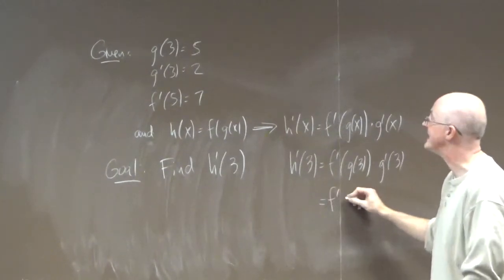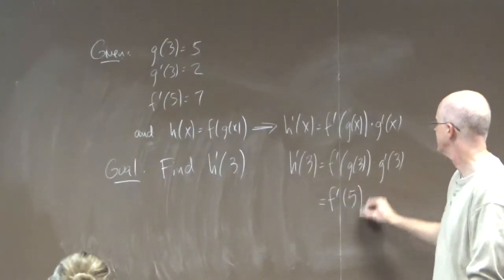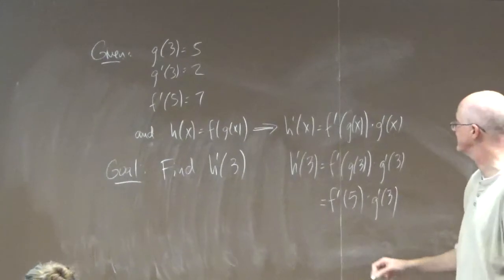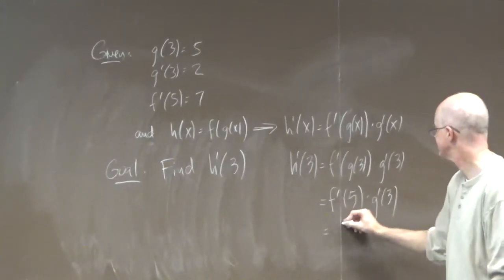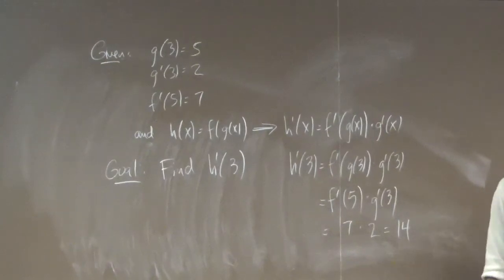h prime of three will be f prime of g of three times g prime of three. g of three is five. And lo and behold, we are given f prime of five and g prime of three. This is seven times two. The answer is fourteen. So it's set up to work as long as you do it carefully.